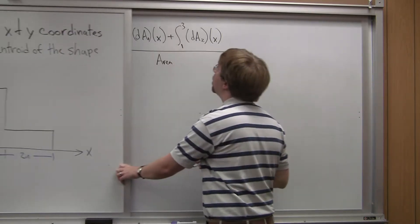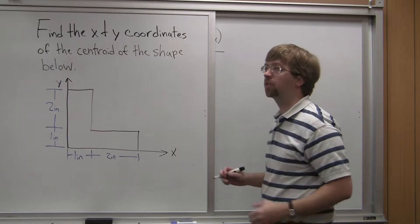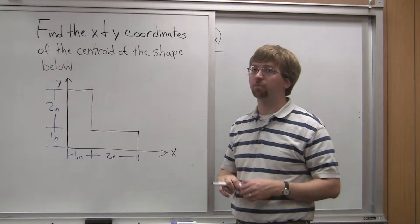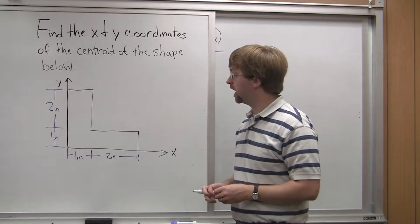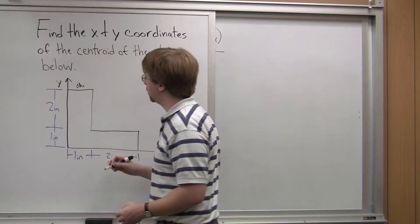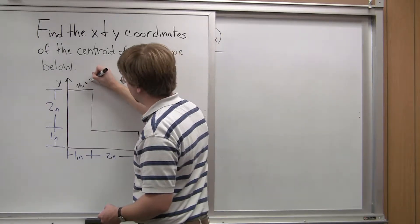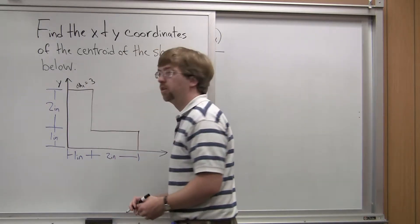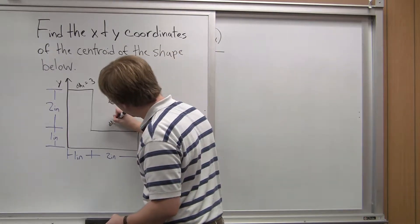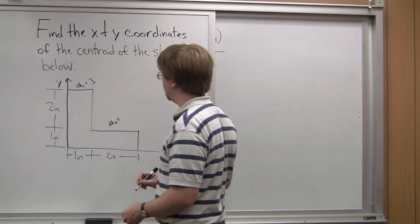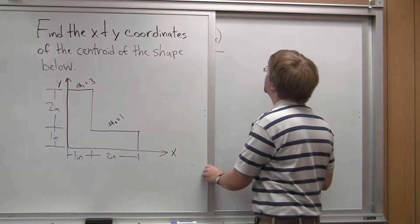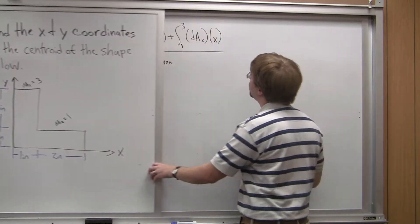So what is dA1 and dA2? The change in area as we move from left to right is just the height. dA1 — that's the height from zero to one — is equal to three. dA2 is equal to one, which is the height from one all the way out to three.